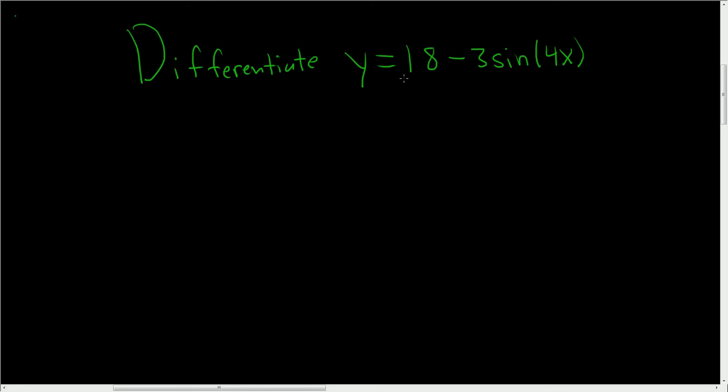In this example, we have to find the derivative of 18 minus 3 times the sine of 4x. So, solution. The derivative of 18 is easy - it's 0, it's a constant function.